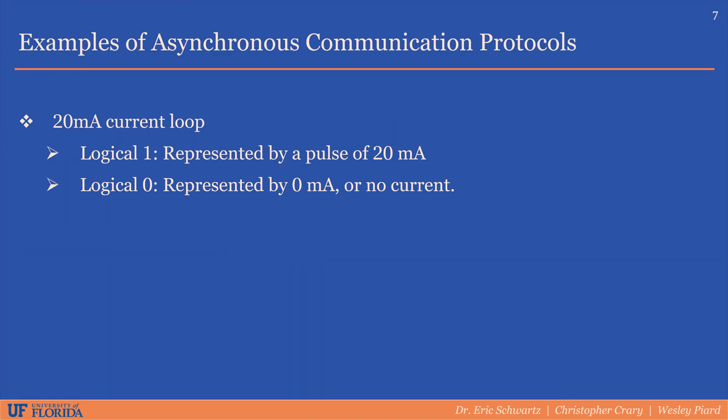An early example of an asynchronous communication protocol is the 20 milliamp current loop, where bits are represented by pulses of current instead of a voltage logic level. A logical 1 is represented by a pulse of 20 milliamps of current and a logical 0 is represented by no current.